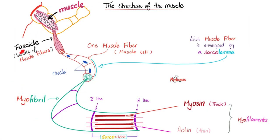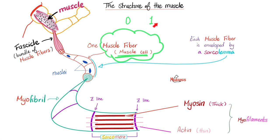Each muscle is made of fascicles. Each fascicle has muscle fibers, which are the muscle cells. Each muscle fiber is made of myofibrils. Which part of the muscle obeys the all-or-none law? The answer is the muscle fiber, because it's the muscle cell. The all-or-none law means it's either zero or one — if you give me threshold, I'll give you maximum contraction. Below threshold, no contraction. There is nothing in between.